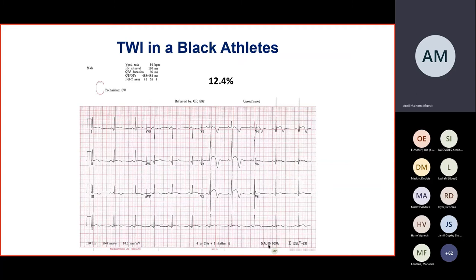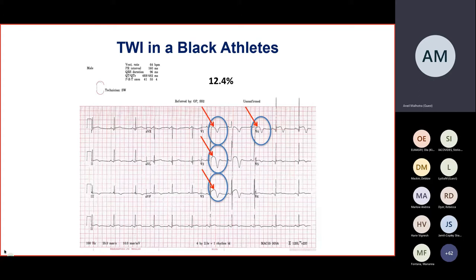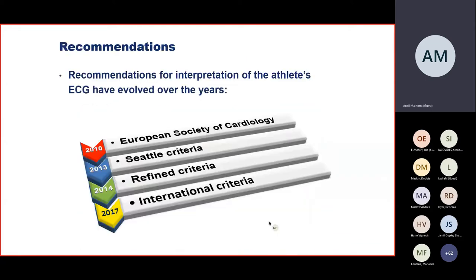I'm going to show an ECG pattern of abnormal T-wave inversion that was previously considered abnormal, but now — since longitudinal studies by Michael Papadakis and the group — this is actually considered a normal variant, particularly when preceded by a convex ST segment shape found in isolation and just limited to V1 to V4 in up to 12% of black athletes.